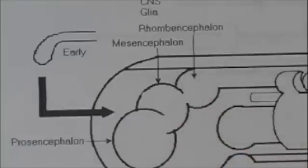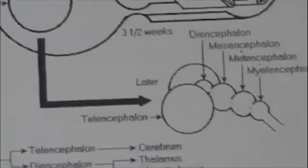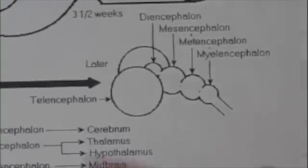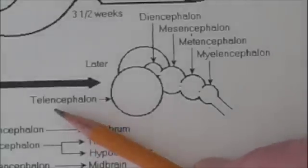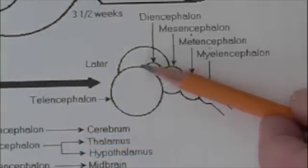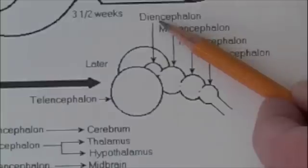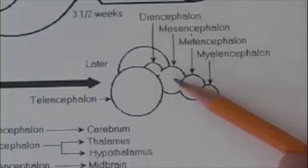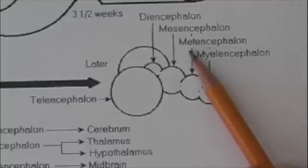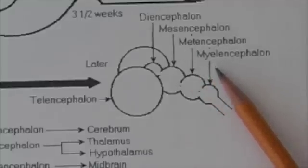Eventually, the prosencephalon develops into two parts, the telencephalon, and in between the two lobes of the telencephalon, the diencephalon. The mesencephalon stays essentially the same, but the rhombencephalon subdivides into a metencephalon and a myencephalon.